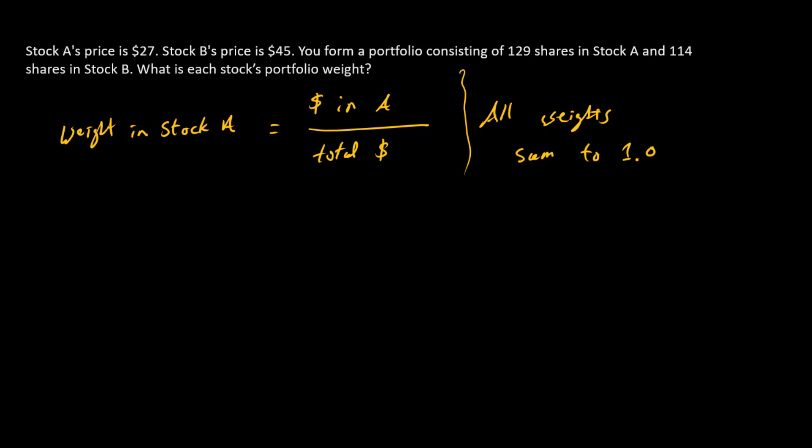Alright. So let's calculate the weights for stock A and B individually. And so in order to calculate these weights, since there's two stocks, we're going to calculate the dollars in each and then the total dollars, and then we'll do the fractions for the weights.